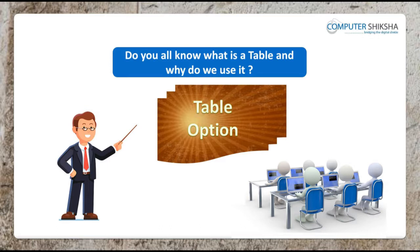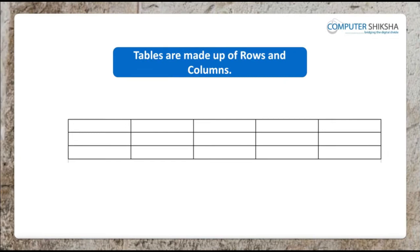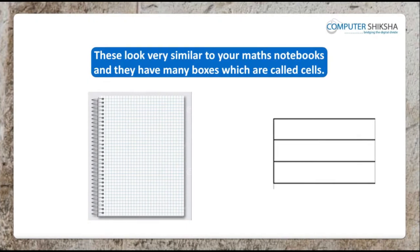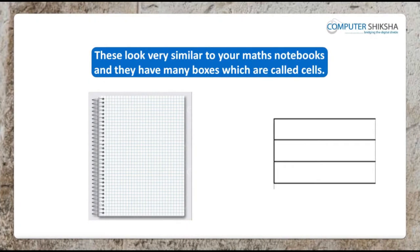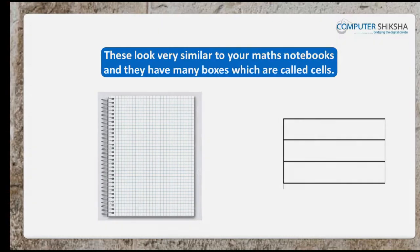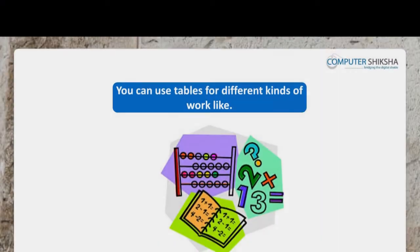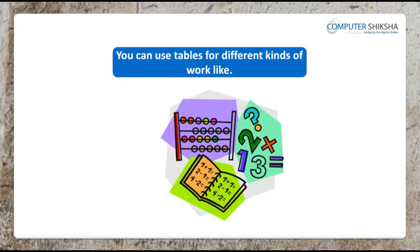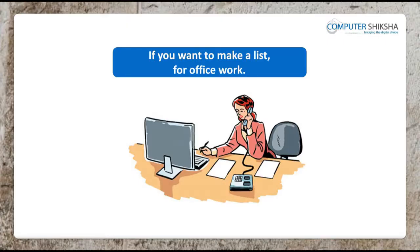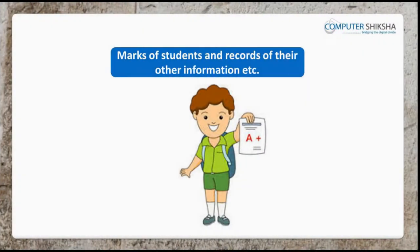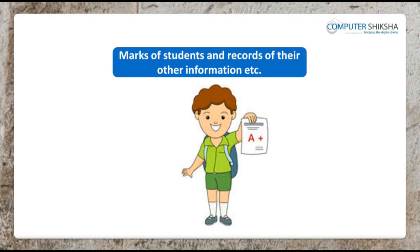Do you all know what is a table and why do we use it? Tables are made up of rows and columns. These look very similar to your maths notebooks, and they have many boxes which are called cells. These cells together form the rows and columns. You can use tables for different kinds of work, like if you want to make a list for office work, to prepare report cards, calendars, marks of the students, and records of their other information, etc.